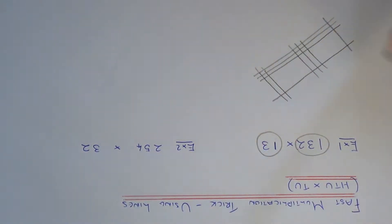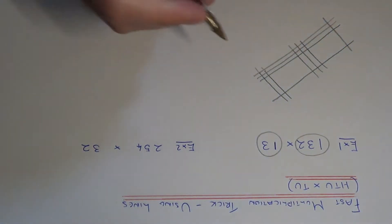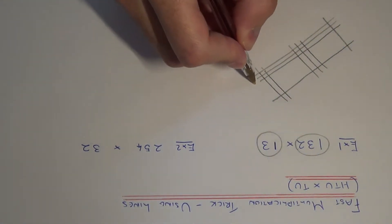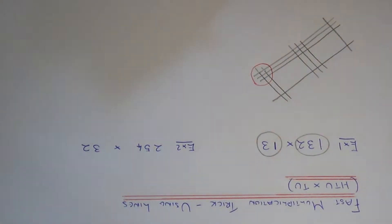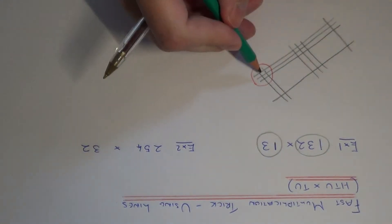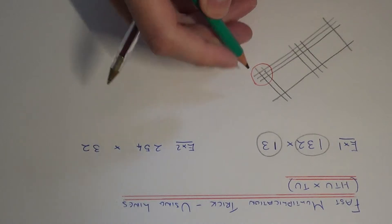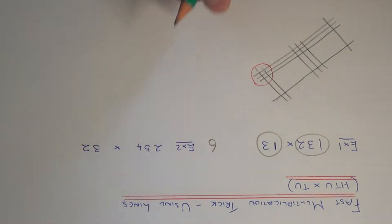Now all we need to do is count the intersections that we have, and this will be part of our answer. So if we first of all count the intersections here, we have one, two, three, four, five, six. So this is the last digit of our answer.